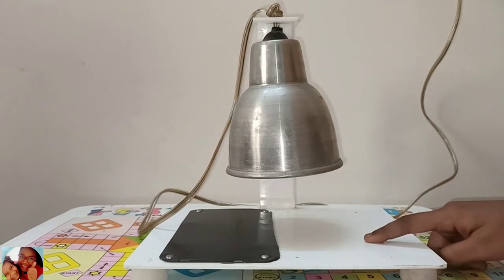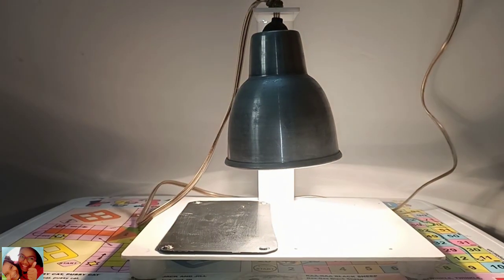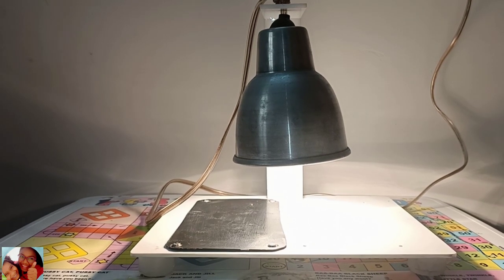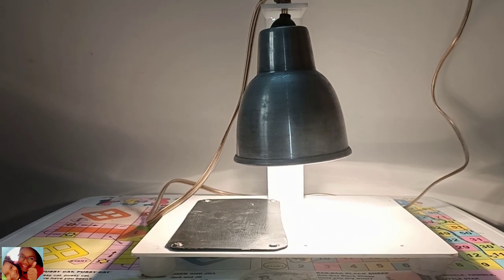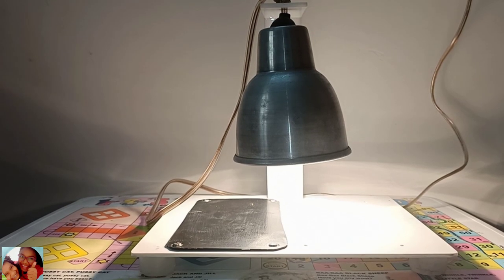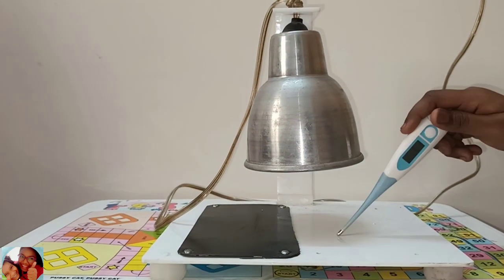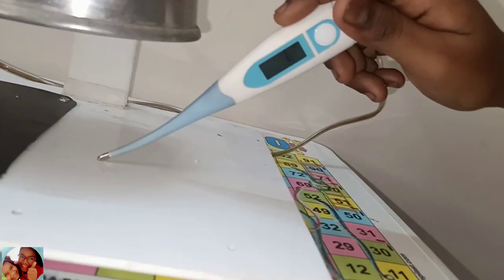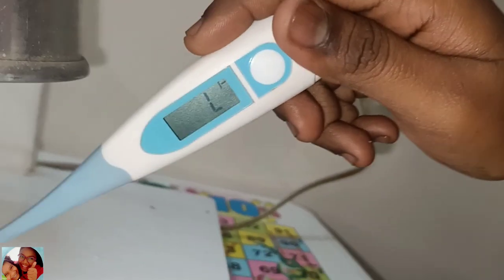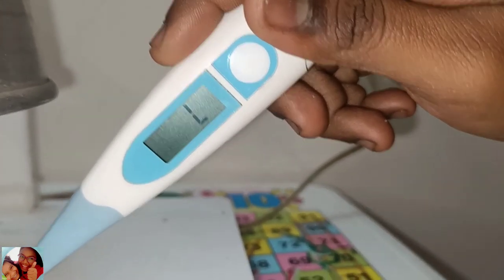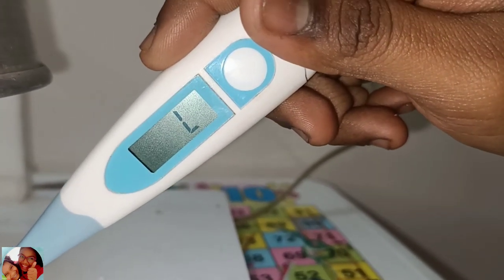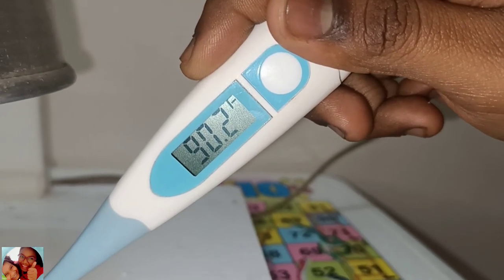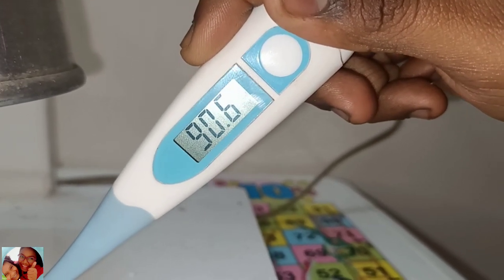It's 94.5. Now we're going to check the white side. It's low. It's still low. 90.4, it's still Fahrenheit.